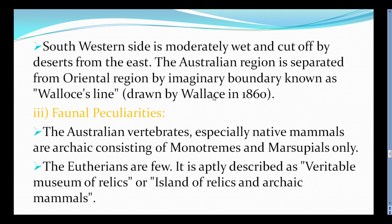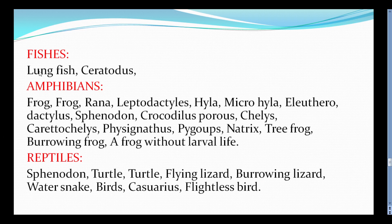The final peculiarity of Australian vertebrates is that native mammals are archaic, consisting of monotremes and marsupials. Eutherians are few. Australia is described as a vertebrate museum of relics. Fishes include lungfishes. Amphibians include Rana, Leptodactylus, and Microhylus. Crocodiles are present. Amphibians include frogs and tree frogs.